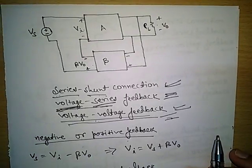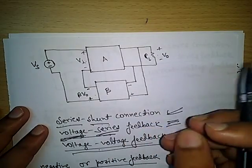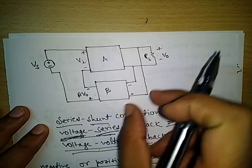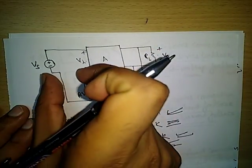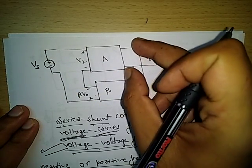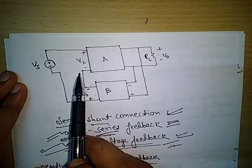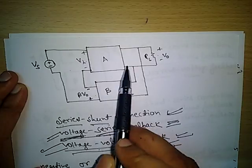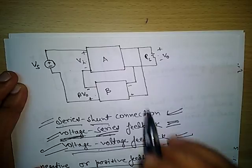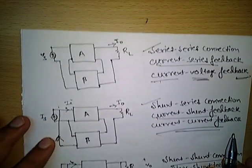Starting with nomenclature: one feedback amplifier is given — this is voltage-voltage feedback. The name comes from voltage being taken from the output and applied as a voltage at the input. Another name is voltage series feedback — voltage taken from output and connected in series at the input. One more name: series connection at input and shunt connection at output, so it can also be called series-shunt connection.